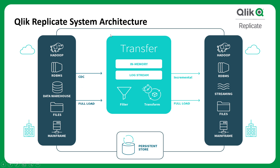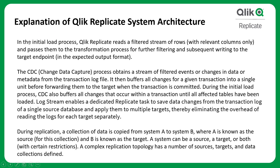There are two modes of replication: CDC (Change Data Capture) and Full Load. CDC, also called incremental load, captures only changed and modified records from System A and transfers them to System B. Full Load means you load all the data from System A to System B.